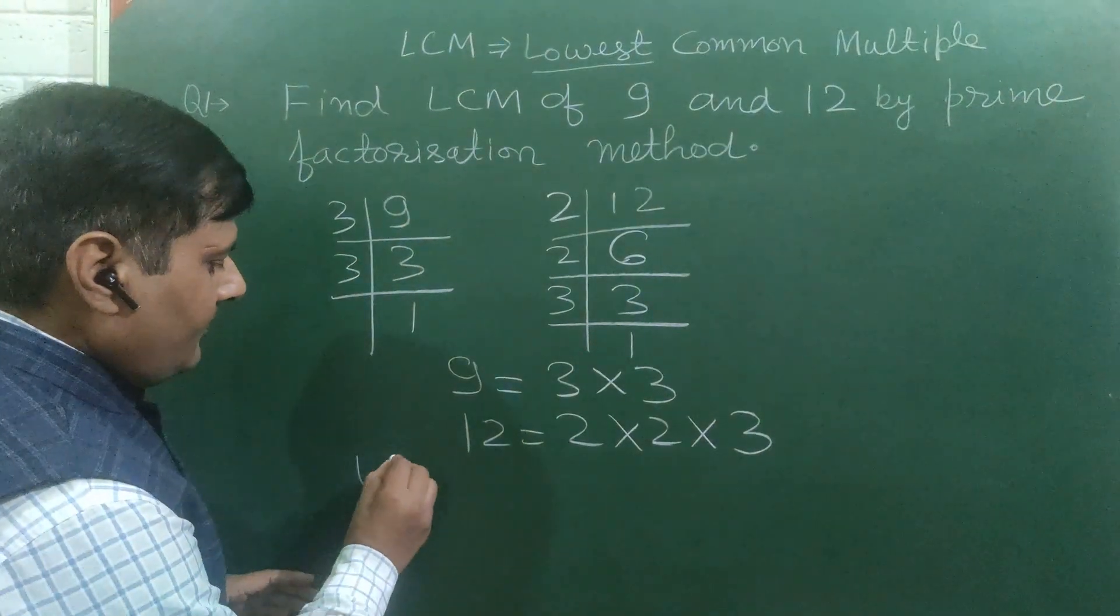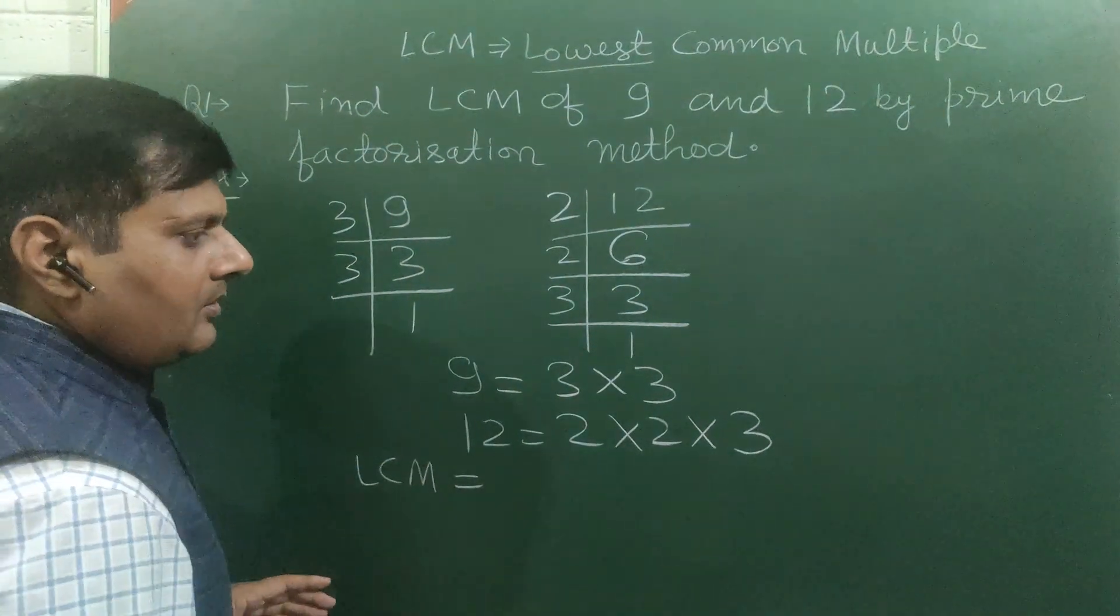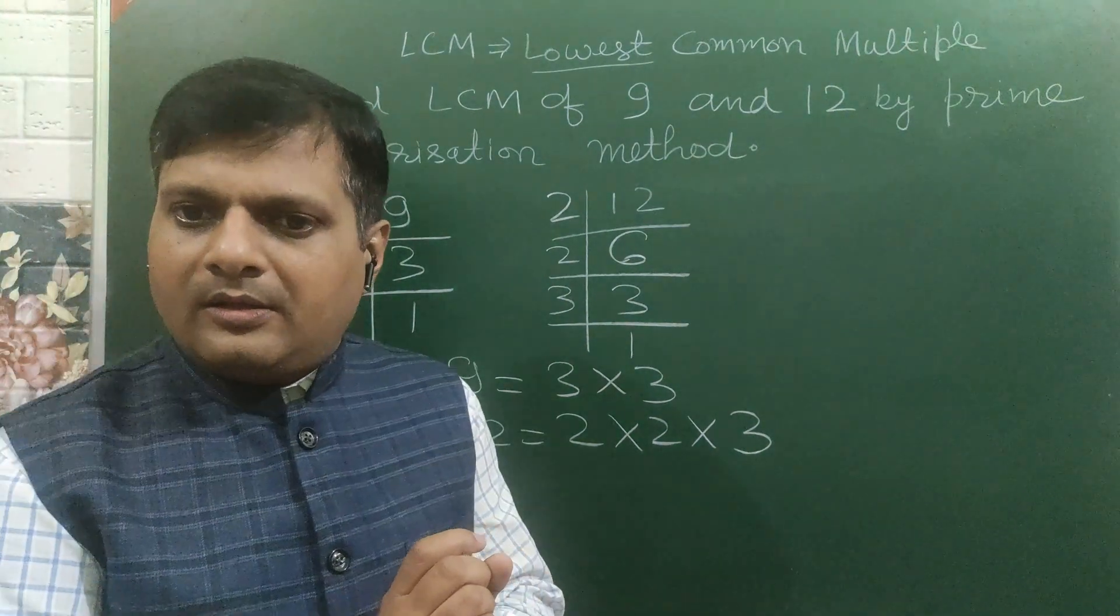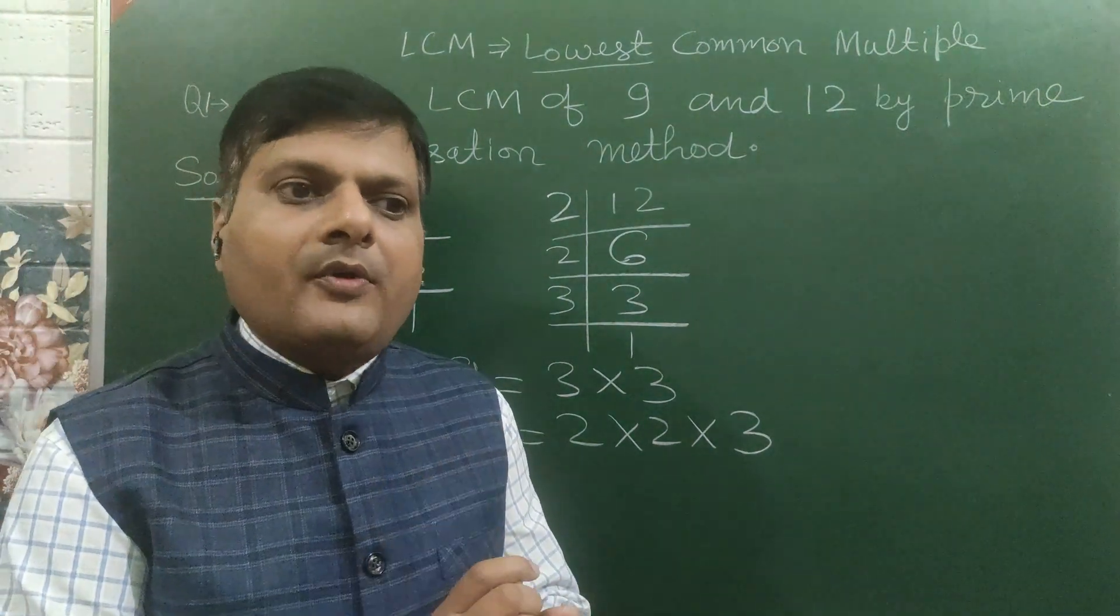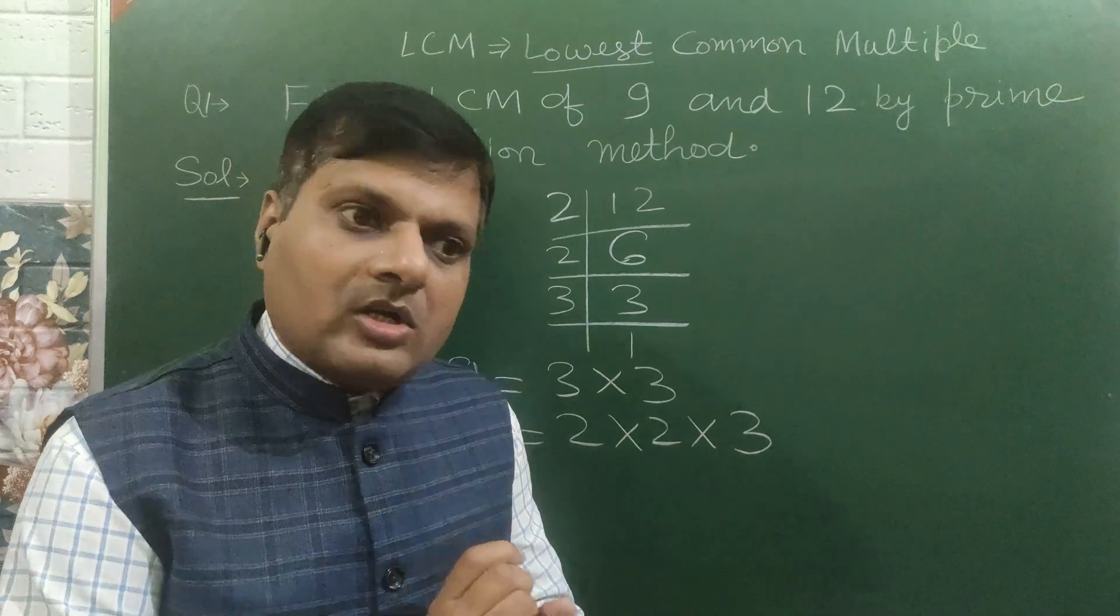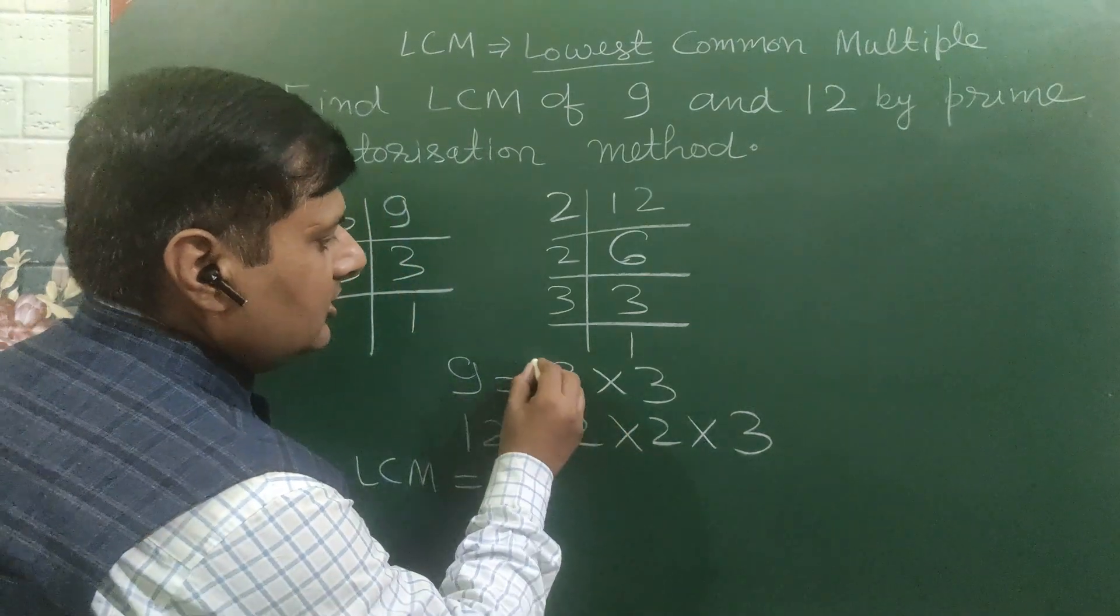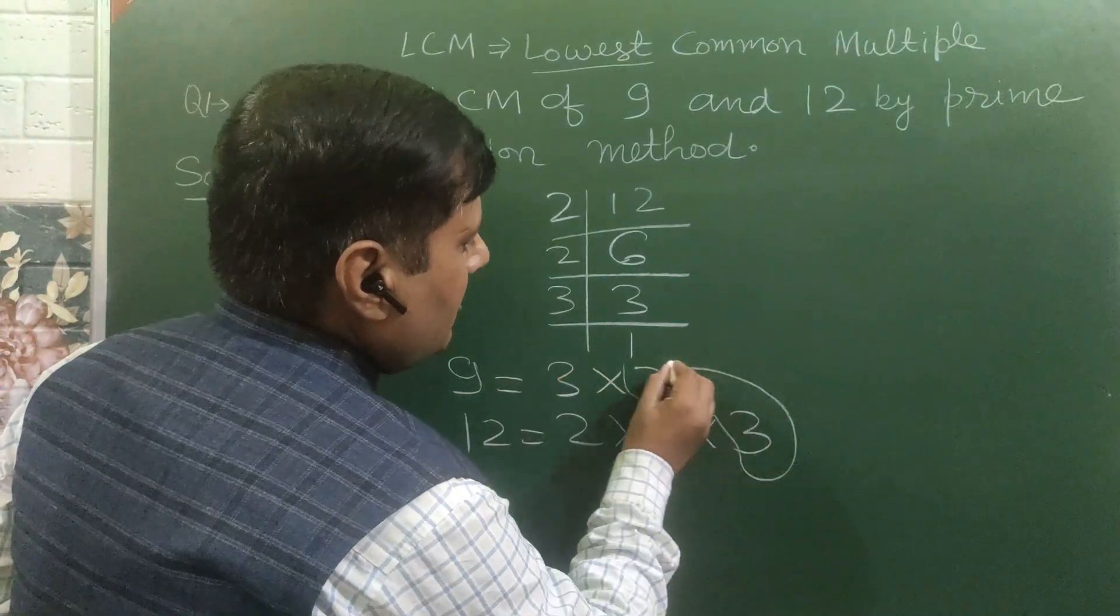LCM: product of common and product of the numbers that is not common. What is common? 3 is common. Write 3 here.